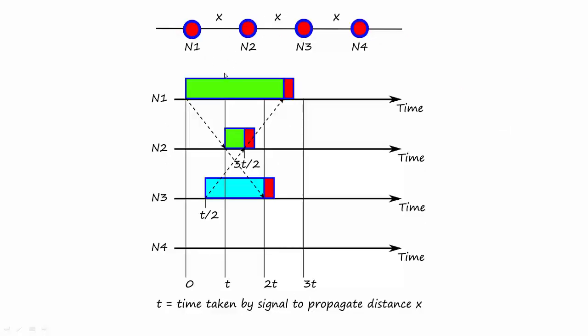This figure explains it in action. We have four nodes N1, N2, N3, N4 connected to the Ethernet, separated by distance x. Let us assume t is the time it takes for the signal to propagate distance x. When node N1 begins transmission at time 0, for this first bit to propagate over this Ethernet it is going to take some time. It is going to reach N2 only after time t and it is going to reach N3 only at time 2t.